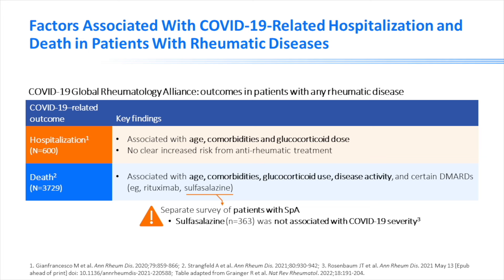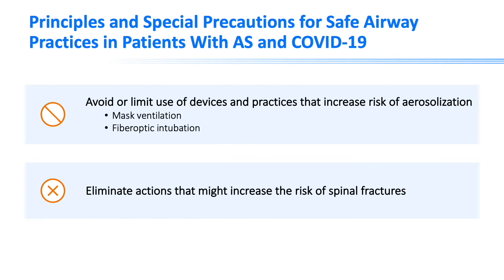Factors associated with COVID-19-related hospitalization and death in patients with rheumatic diseases included increased age, more comorbidities, and glucocorticoid use; sulfasalazine use was not associated with COVID-19 severity. The general principles for safe airway management remain similar to patients without COVID-19, but bag-mask ventilation and fiber optic intubation increase the risk of aerosolization and provider exposure in COVID-19 patients, and may not be the best techniques in these cases.